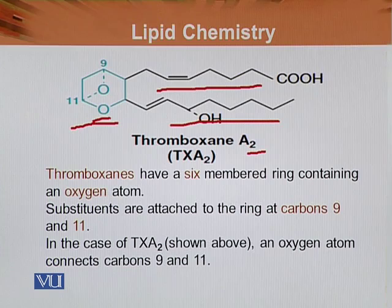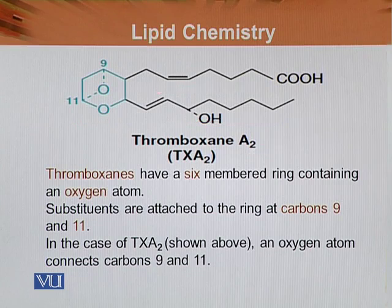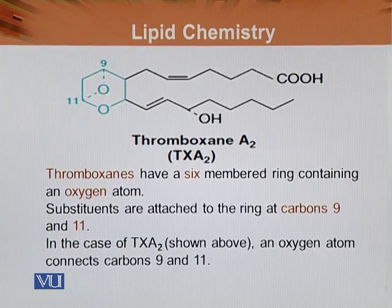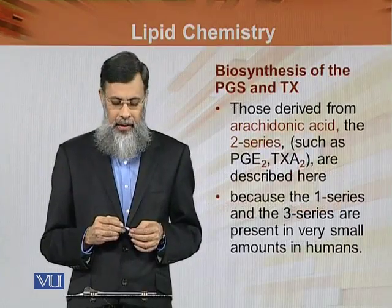In the case of thromboxane A2, which is shown here, an oxygen atom connects between carbon atom number nine and eleven. Between nine and eleven there is another carbon atom. This is the main difference between the thromboxane and the prostaglandins.